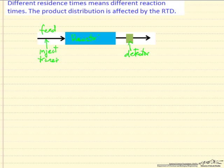It takes some time for the tracer to move through the reactor, and because different molecules spend different amounts of time in the reactor in general, then some of the tracer is going to show up sooner than other parts of the tracer that was injected because of this residence time distribution.